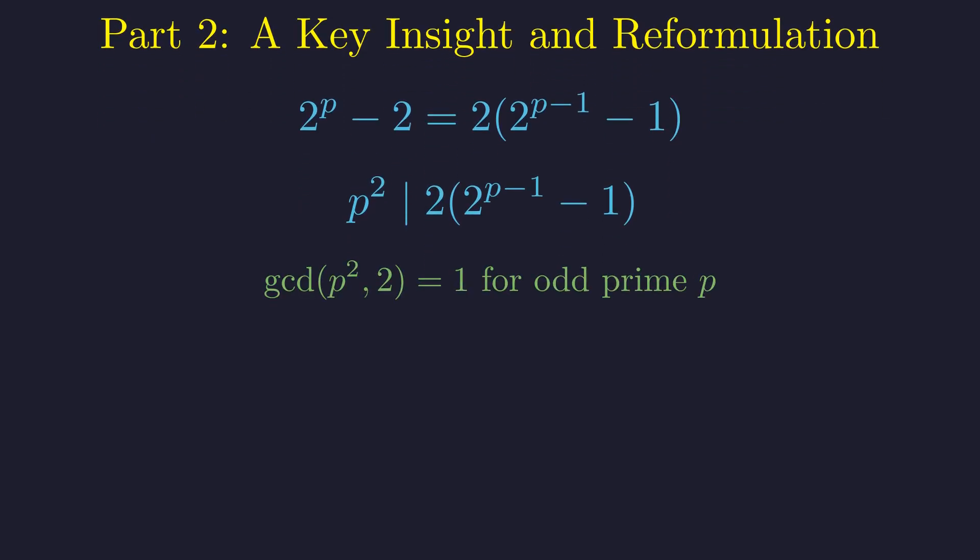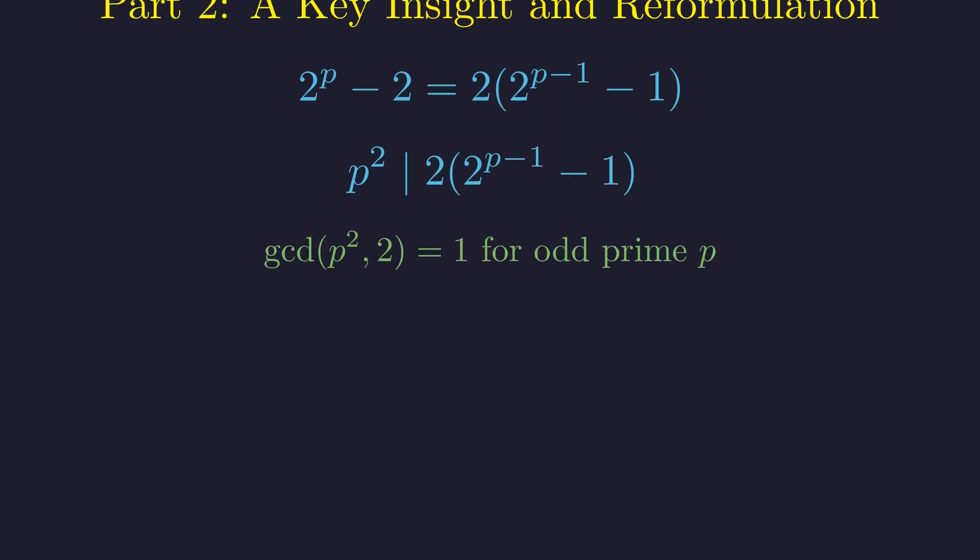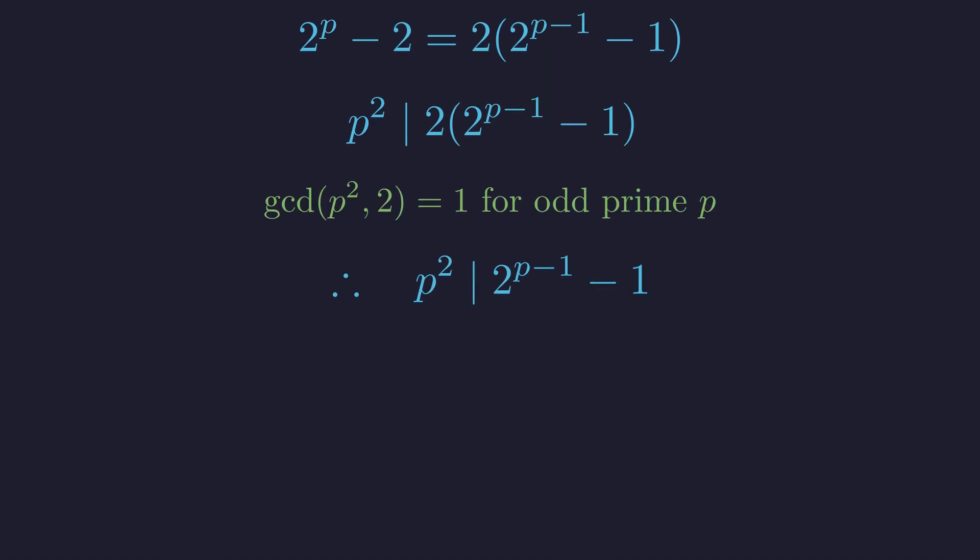The greatest common divisor of p squared and 2 is 1, meaning they are co-prime. Therefore, for the divisibility to hold, p squared must divide the second factor entirely. Our problem reduces to this elegant condition.